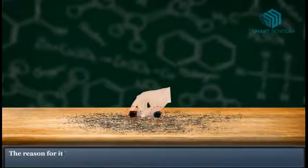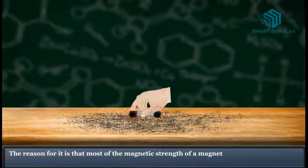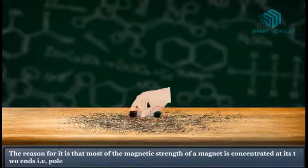The reason for it is that most of the magnetic strength of a magnet is concentrated at its two ends, i.e. poles.